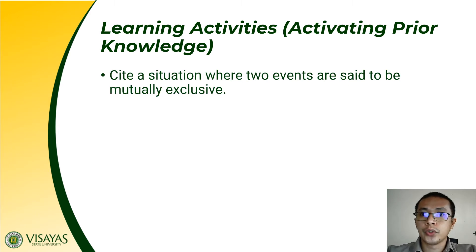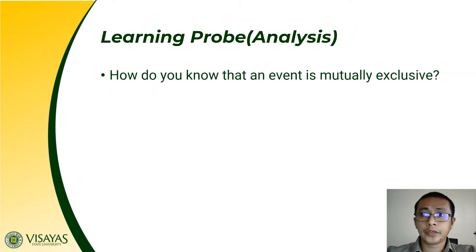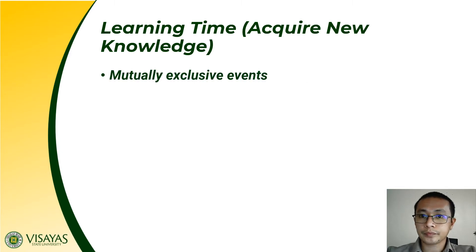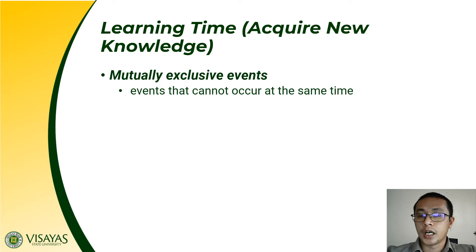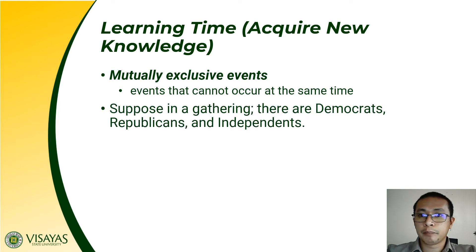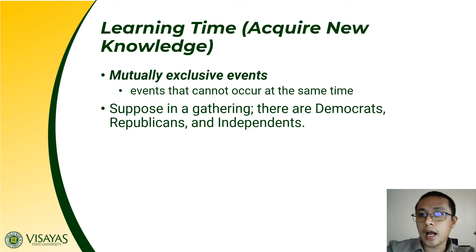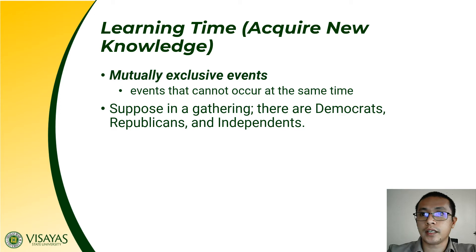Let us cite a situation where two events are said to be mutually exclusive. How do you know that an event is mutually exclusive? Mutually exclusive events are events which cannot occur at the same time. For example, in a gathering there are groups of individuals: Democrats, Republicans, and Independents. A person can either be Democrat, Independent, or Republican, but they cannot be both. Since a person cannot be Democrat and Republican or Independent at the same time, we refer to these as mutually exclusive events.